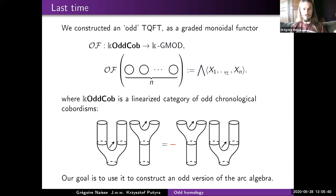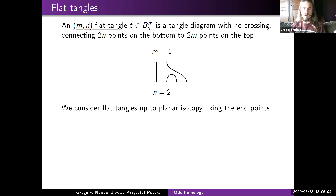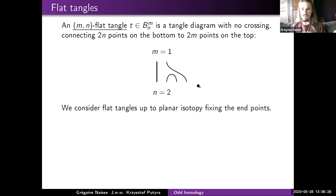To extend these constructions to tangles — following the same idea as Khovanov in the usual case — we need to construct an odd version of an arc algebra. First, let me define an n-flat-tangle as a tangle diagram with no crossings connecting two endpoints at the bottom to two endpoints at the top, considering only tangles with an even number of starting and ending points, considered up to planar isotopy fixing the endpoints.